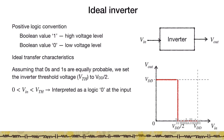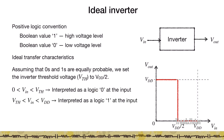Between 0 and the threshold voltage, the voltage at which you have the sharp transition at the output is known as the inverter switching threshold or the inverter threshold voltage. Any value of voltage below this threshold voltage in this ideal inverter is interpreted as a logic 0, and a value higher than that is interpreted as a logic 1 at the input.